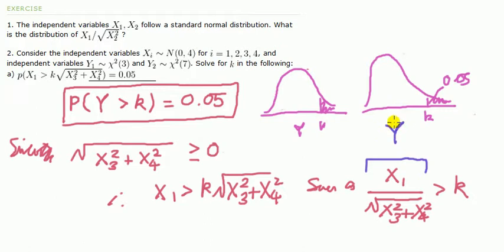So what remains is to find the distribution of this Y. Look at the top there, that's a normal divided by the square root of sum of normal squares.